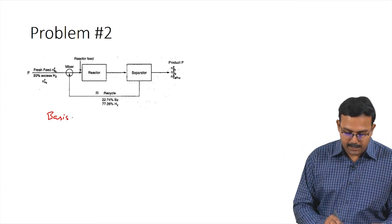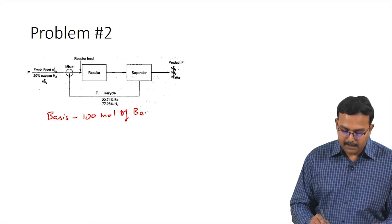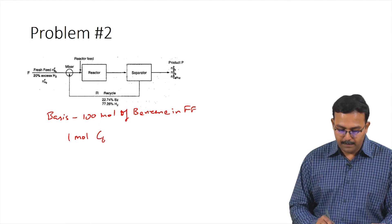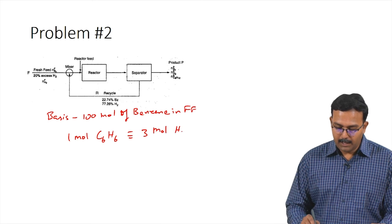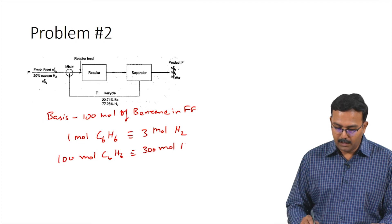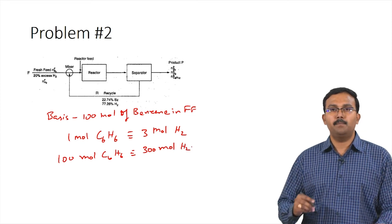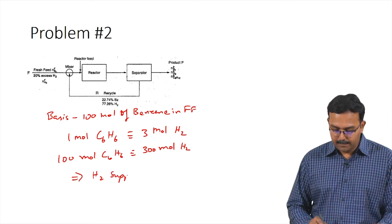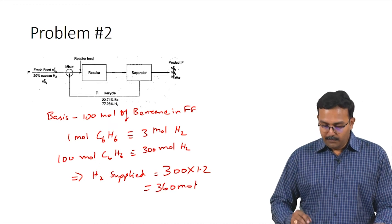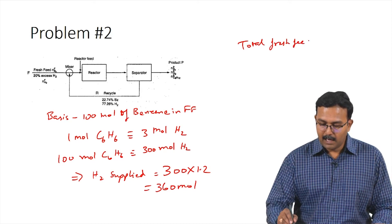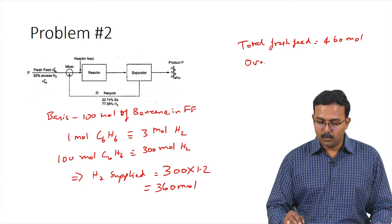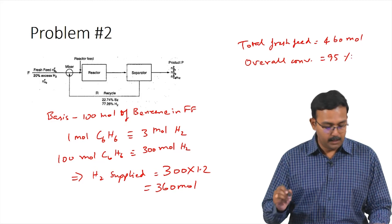Basis: 100 moles of benzene in fresh feed. From stoichiometry, 1 mole of benzene requires 3 moles of hydrogen, so 100 moles of benzene requires 300 moles of hydrogen. With 20% excess hydrogen, hydrogen supplied = 300 × 1.2 = 360 moles. Total fresh feed = 100 + 360 = 460 moles. The overall conversion is 95%.